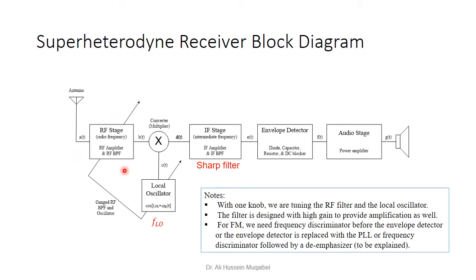Here is the general block diagram for the superheterodyne receiver. Starting from the left, the antenna feeds into the RF stage, which consists of a band-pass filter and amplifier that filters and amplifies the signal. The arrow through the block indicates it is tunable. There is a second tunable block, and the two tuning arrows are ganged together, meaning adjustments are made simultaneously.